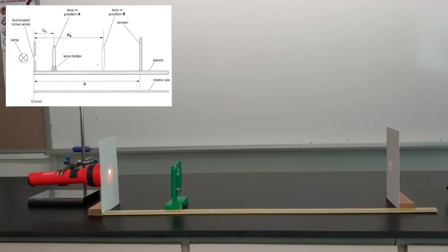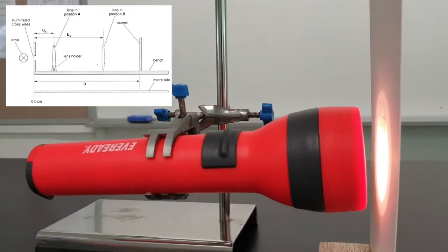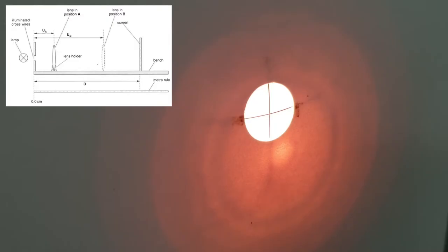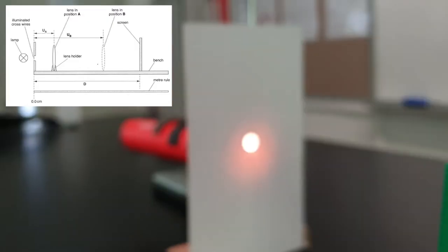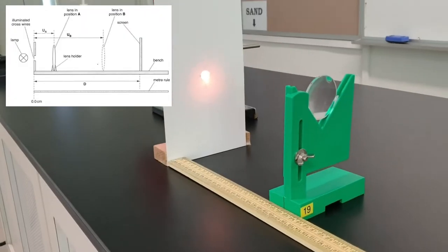As mentioned, the lamp usually comes in the form of a torchlight. For this experiment, the cross wire is on cardboard, and you can see two physical wires at 90 degrees to each other. Some cross wires can be on the torchlight itself, followed by the lens and then the screen.